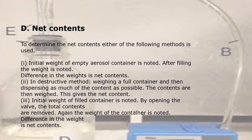Net contents: to determine net contents, the initial weight of the empty aerosol container is noted, and after filling, the weight is noted again — the difference is net contents. In the destructive method, a full container is weighed and as much content as possible is dispensed; the contents are then weighed. Alternatively, the initial weight of the filled container is noted, the total contents are removed by opening the valve, and the weight of the empty container is noted; the difference is net contents.